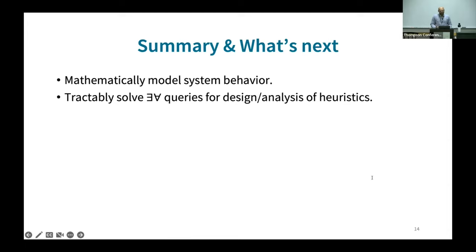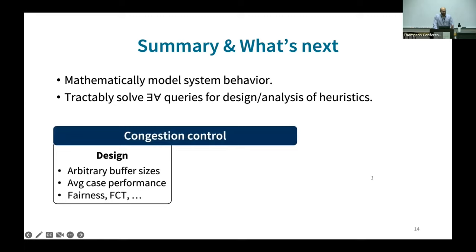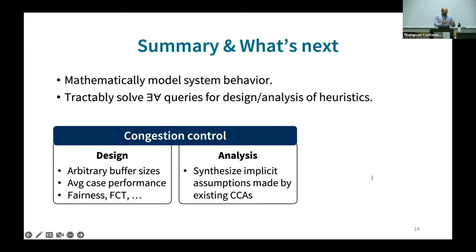In summary, in systems we are at a time where we have good mathematical tools to model our heuristics and the environments they operate in. We can use these tools to perform automated reasoning, allowing us to ease the design and analysis of heuristics. Looking forward, we are experimenting with different settings such as arbitrary buffer sizes and also designing CCAs that have better average case performance in addition to good worst case performance, and looking at more challenging objectives such as fairness or flow completion time.